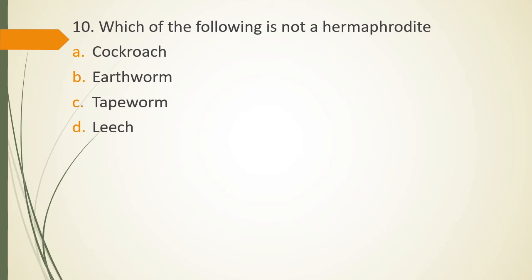Question 10. Which of the following is not a hermaphrodite? Cockroach, earthworm, tapeworm, leech. The correct answer is Option A. Cockroach is not a hermaphrodite. And what does a hermaphrodite mean? It means same organism is having both the organs of male as well as female.